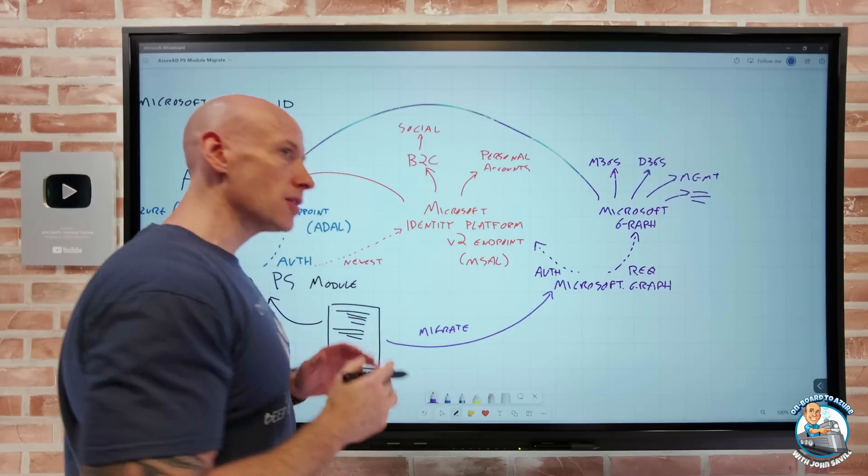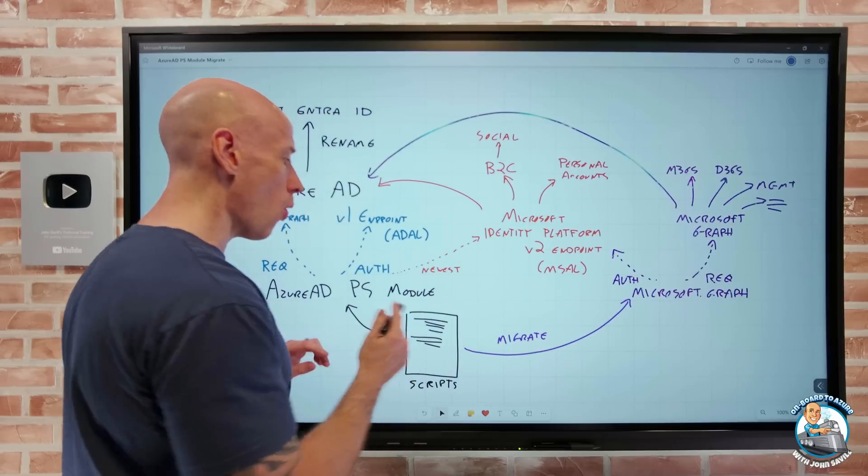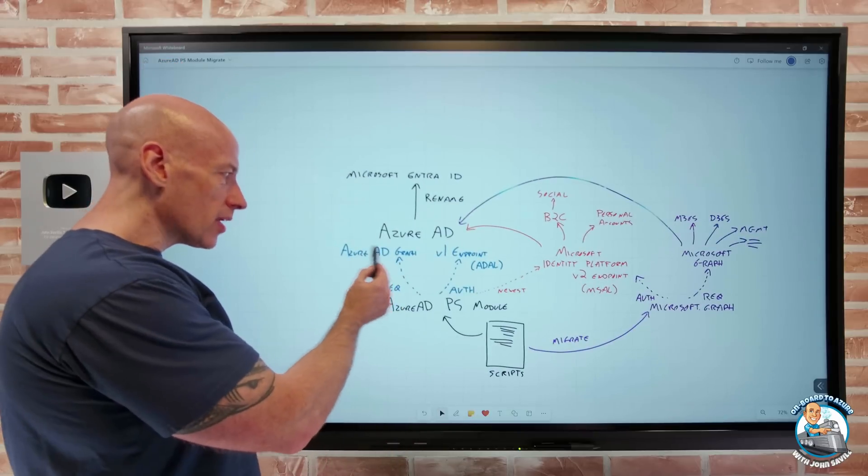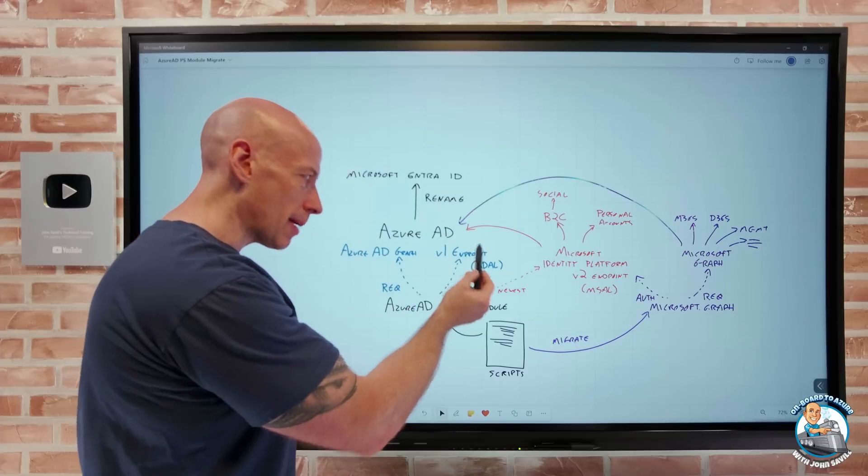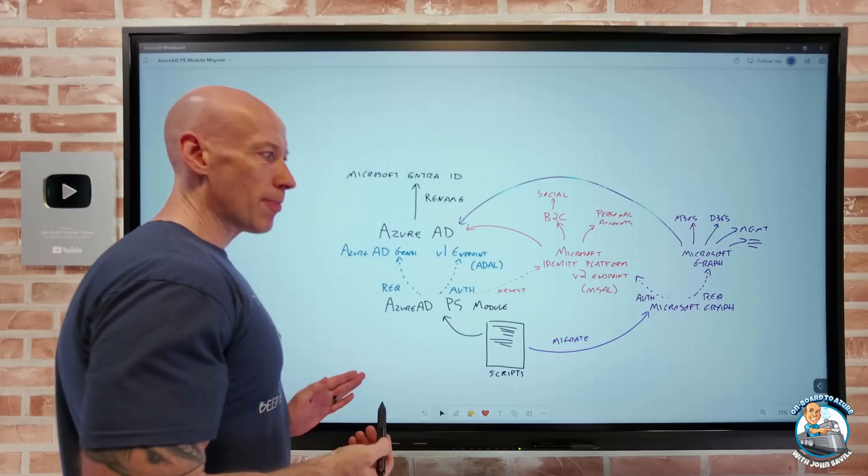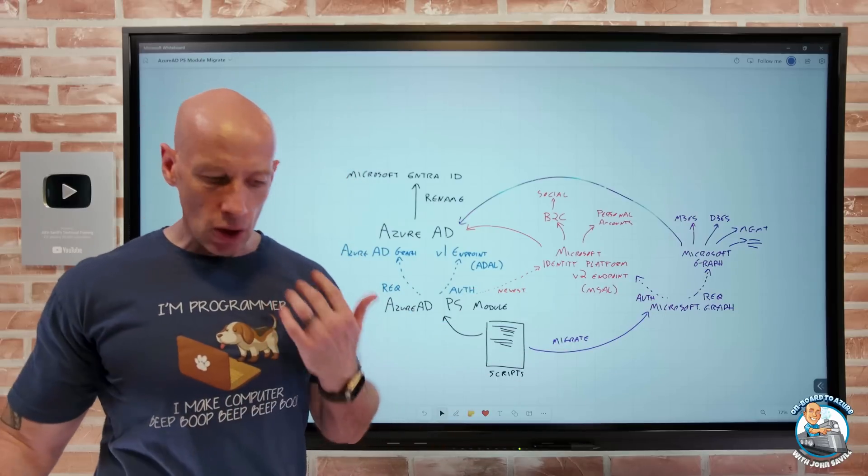So this is nothing to do with the rename. This is to do for the fact that for a while now, this has been on a deprecation path. The Azure AD module, the V1 endpoint, the Azure AD graph API—those are what this uses. So this is on a deprecation path. I have to move over to the go-forward technology.